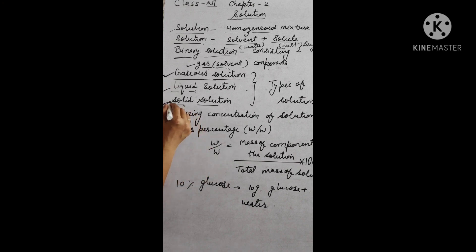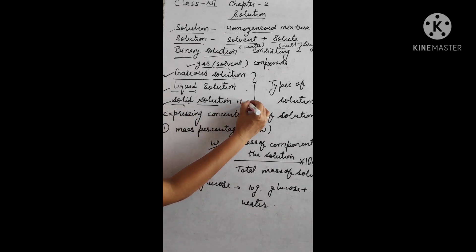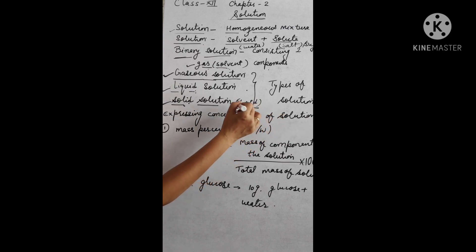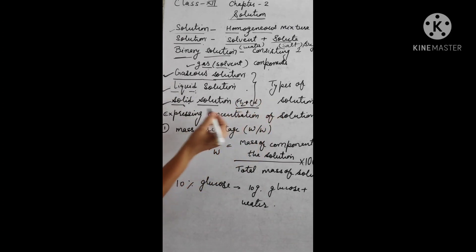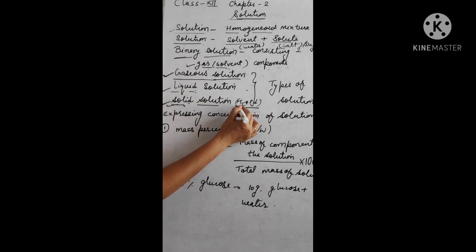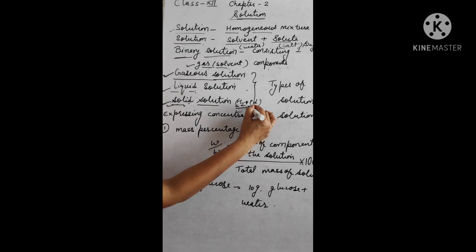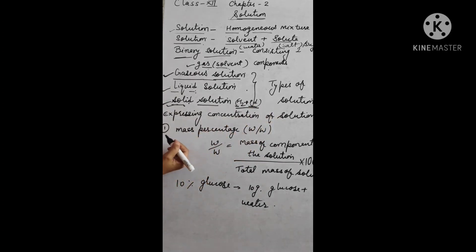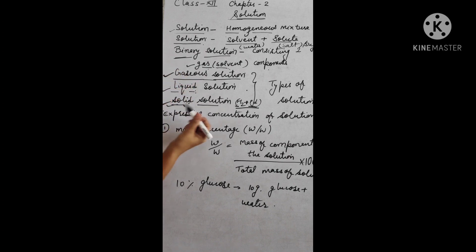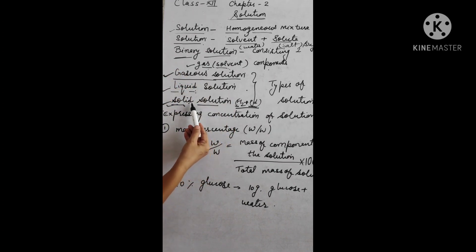An example of a solid solution: hydrogen gas mixed in palladium metal. Hydrogen can be absorbed and fixed into palladium, forming a solid solution where hydrogen acts as the gas solute and palladium acts as the solvent. So according to physical state, we have three types of solutions: gaseous solution, liquid solution, and solid solution.